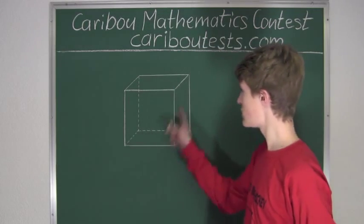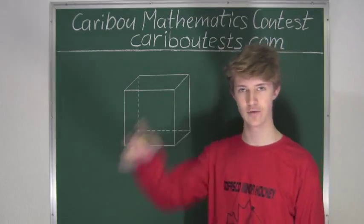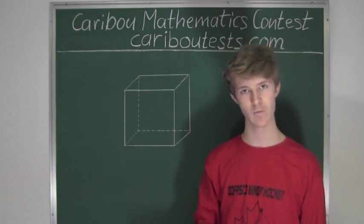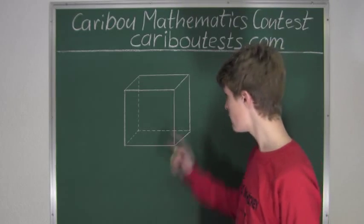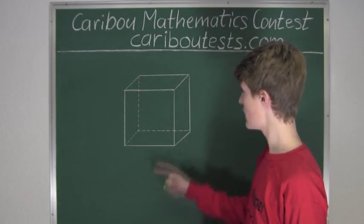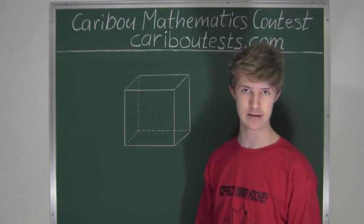Alright, so we know that in a cube there are six faces, four around and one at the top and one at the bottom as shown here. And we know that every single edge on a cube touches two different faces.